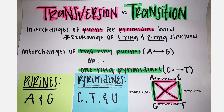Transversion and transition refer to the type of nucleotide that is being mutated. Transversion mutations are interchanges of 1-ring pyrimidine bases for 2-ring purine bases. An example of this is exchanging adenine for cytosine. Transition mutations are interchanges of 2-ring purines like adenine and guanine, or 1-ring pyrimidines like cytosine and thymine.